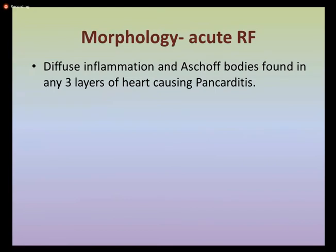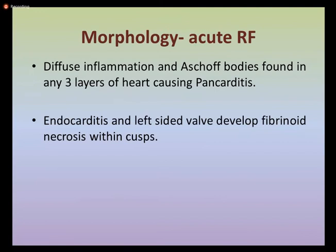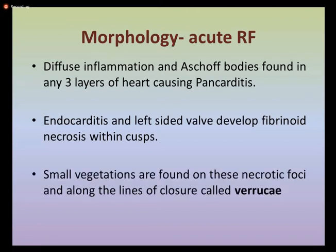Morphological features include diffuse inflammation with Aschoff bodies found in all three layers of the heart, potentially causing pancarditis. There is endocarditis, and left-sided valves develop fibrinoid necrosis within the cusps. Fibrinoid necrosis is a pattern of irreversible cell death occurring when antigen-antibody complexes deposit in blood vessel walls. Small vegetations — called verrucae — form on these necrotic foci along the line of valve closure, arising due to inflammatory erosion of the valve surface followed by platelet and fibrin precipitation.